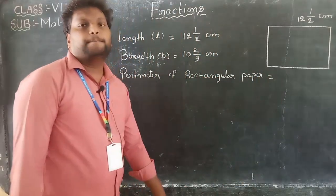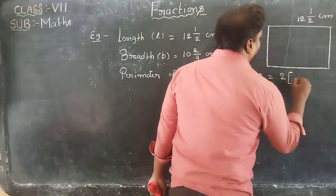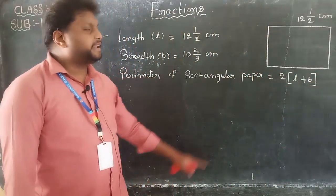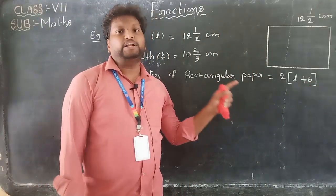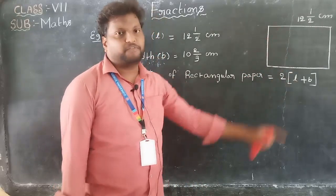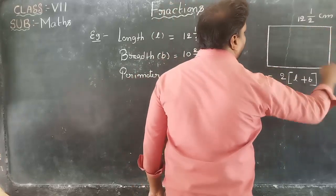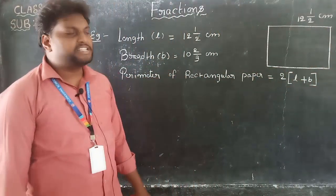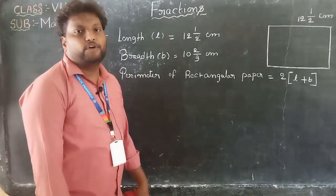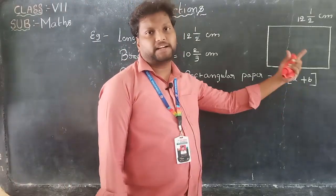What is the formula? Perimeter of rectangle equals 2 into (L + B). Why? Because in a rectangle we have 2 lengths and 2 breadths. L plus B means one combination — from here to here is one length plus breadth, and the opposite side is also one length plus breadth. Means it appears 2 times, that's why 2 into (L + B). This is the basic formula we studied in 6th class.